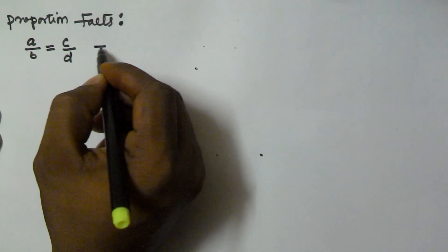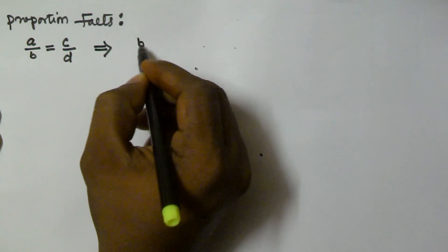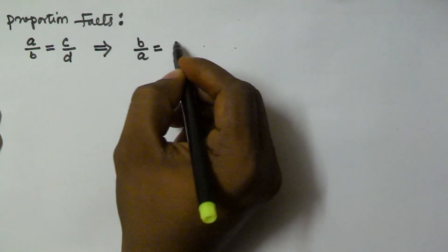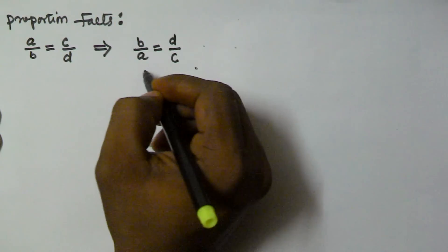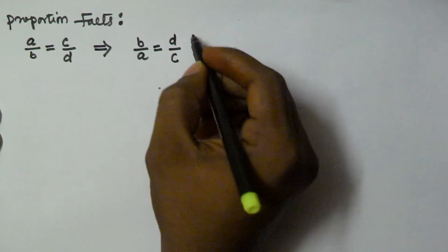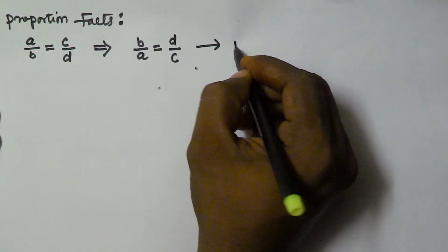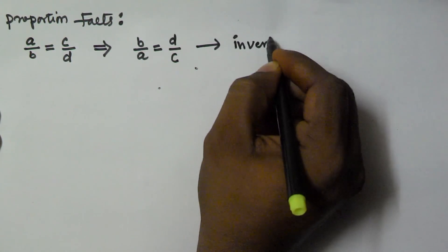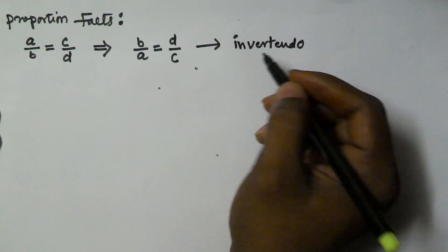The same proportion can also be written as B by A is equal to D by C. So this is called as invertendo.